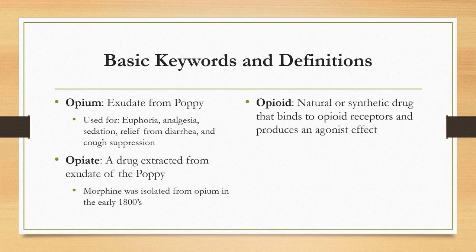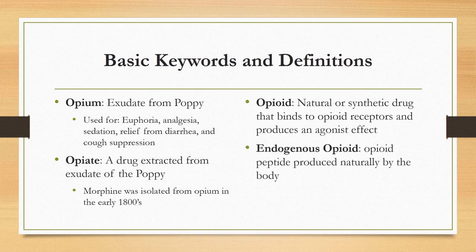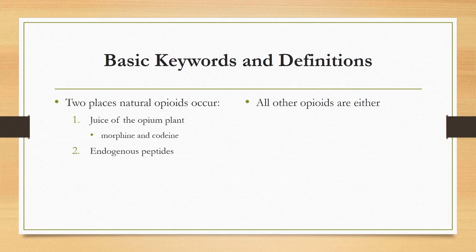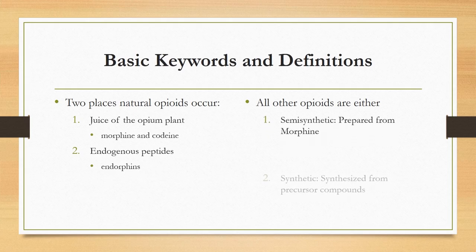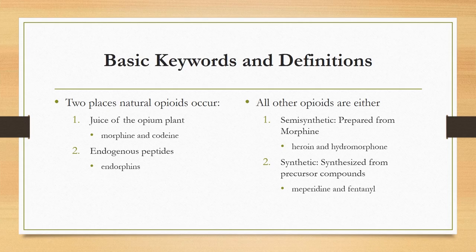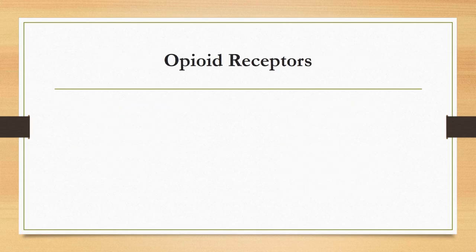Endorphins are endogenous opioid peptides produced naturally by the body. Natural opioids occur in the juice of the opium plant — from which morphine and codeine are derived — and in endogenous peptides. All other opioids are either semi-synthetic or synthetic. Semi-synthetic means prepared from morphine; heroin, for example, was originally manufactured for hospital settings. Synthetic means man-made compounds: meperidine and fentanyl are two examples.